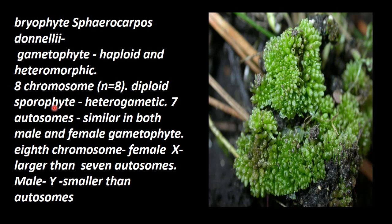This sporophyte has got a female sex organ, that is archegonium, and a male sex organ, that is antheridium. They produce eggs and sperm — that is called heterogametic.